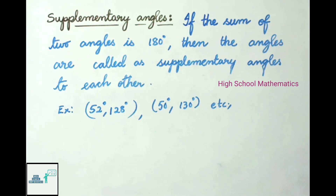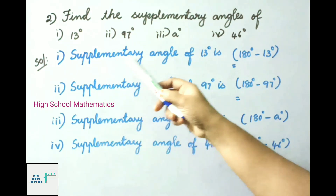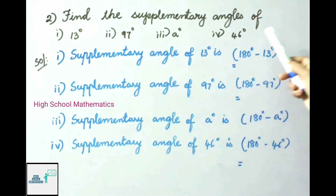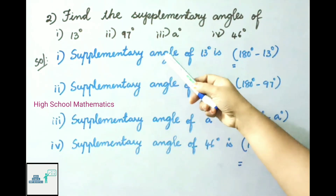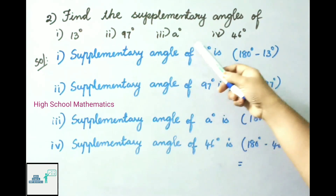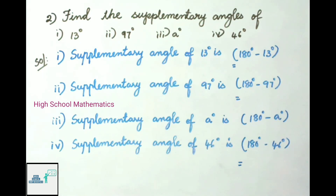See an example: 50 degrees and 130 degrees — the sum of these two angles is 180 degrees, therefore these two angles are called supplementary angles. See now question number 2: find the supplementary angles of 13 degrees, 97 degrees, 8 degrees, and 46 degrees.